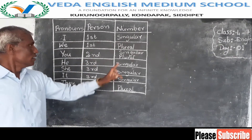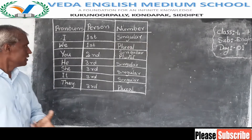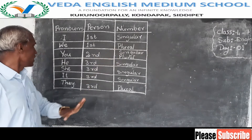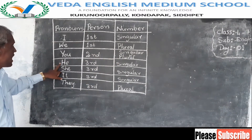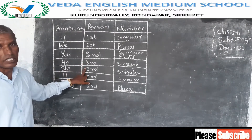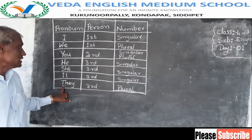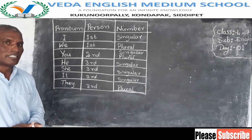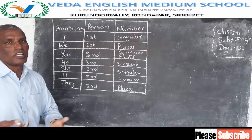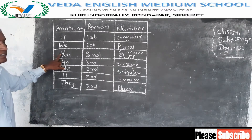We also use you for one person or more than one. That's why we say you is singular and plural. He, she, it, and they are the third person. Third person is the subject about which we are talking. That's why we call it third person.